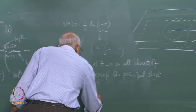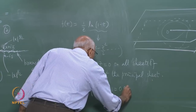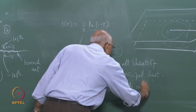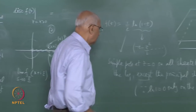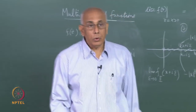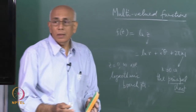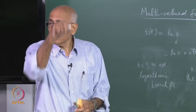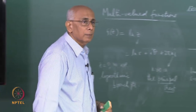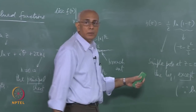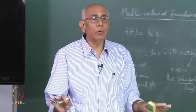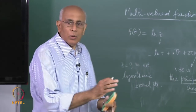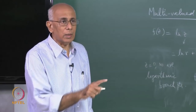This function has a simple pole at z = 0 on all sheets of the log except the principal sheet, because log(1) = 0 only on the n = 0 sheet. You have to be cautious — there could be some singularities on some sheets and other singularities on other sheets. It does not always follow that a singularity goes all the way through. We will construct more complicated examples. Do not blindly put log(1) = 0; you have to ask which sheet you are on.